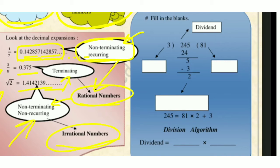To summarize decimal expansion: rational numbers have either terminating or non-terminating recurring decimal expansions. Irrational numbers always have non-terminating non-recurring decimal expansions. This is the key concept.